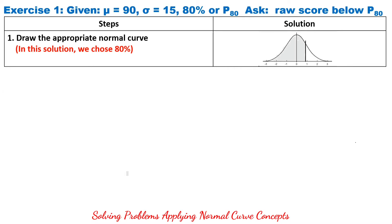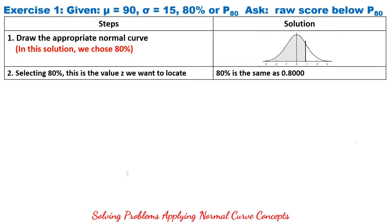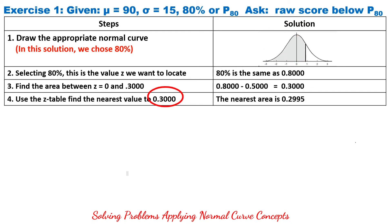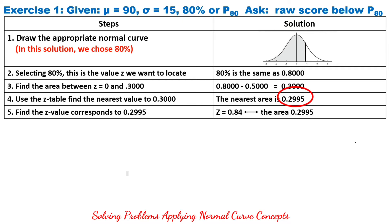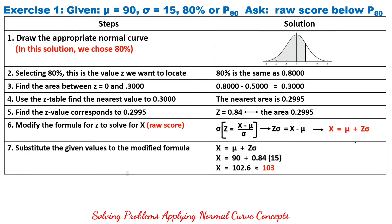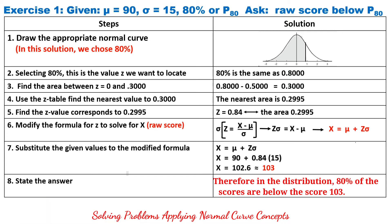As mentioned earlier, we can also choose 80%. Selecting 80%, it is the same as 0.8000. To find the area between Z equals 0 and 0.3000, we subtract: 0.8000 minus 0.5000 equals 0.3000. Locating 0.3000 on the Z-table, it is nearest to 0.2995, whose Z score is 0.84. Substituting that value into the modified formula gives X equals 103 — the same result.